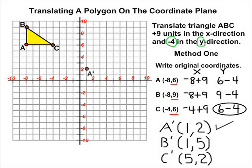After we have the new ordered pairs for A, B, and C, we can record those ordered pairs on our coordinate plane and actually check to see if it was translated in the correct position.